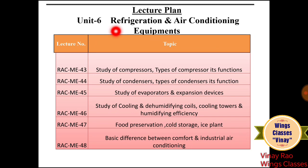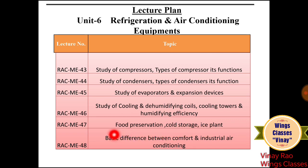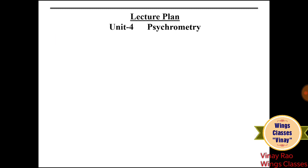Unit 6 is a theoretical unit to understand Refrigeration and Air Conditioning Equipment. Lecture 43 covers the Study of Compressors — different types, functions, and components of vapor compression and air conditioning refrigeration systems. Lecture 44 covers condensers and types. Lecture 45 covers evaporators and expansion devices. Lecture 46 covers cooling and dehumidification coils, cooling towers, and humidifying efficiency. Lecture 47 covers food preservation, cold storage, and ice plants. Lecture 48, the last lecture, covers the basic difference between comfort and industrial air conditioning.